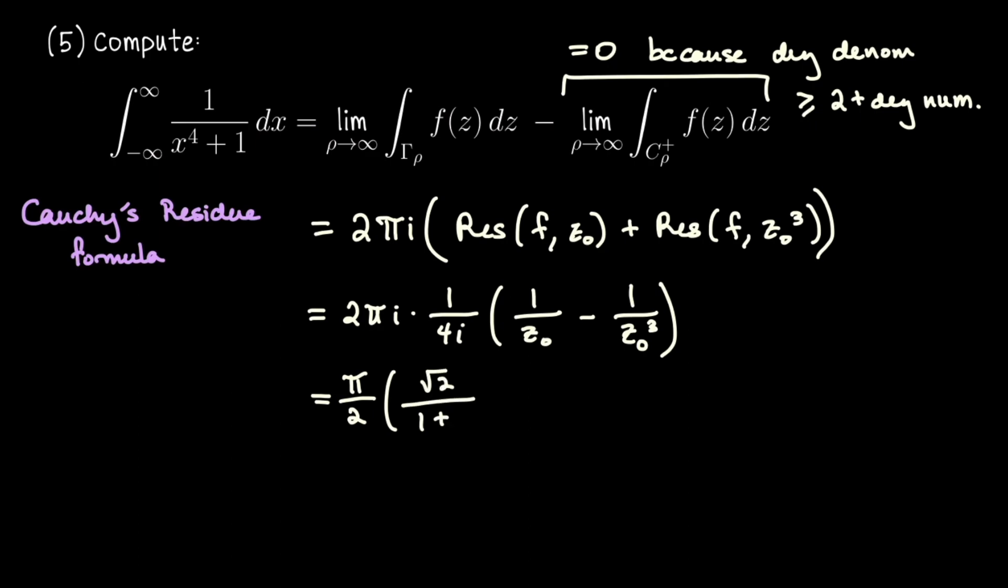All right this leading product is going to be pi over 2 and then 1 over z naught is square root of 2 over 1 plus i minus 1 over z naught cubed is going to be square root of 2 all over negative 1 plus i. Square root of 2 divided by 2 is 1 over the square root of 2. So let me pull the square root of 2 out and combine that with pi over 2 to write pi over the square root of 2. And then we'll add the two remaining fractions together that's going to be like finding a common denominator. So we'll have negative 1 plus i minus the quantity 1 plus i. There we go. That will be the numerator.